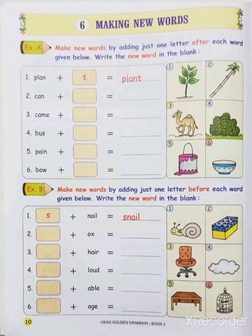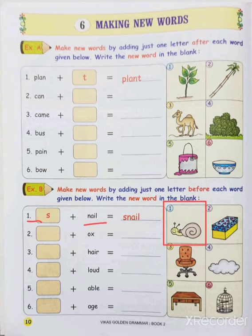Here we go. What is the first one? You can see N, A, I, L — nail. Nail means nakhun, as you all know. This is also a word. According to the picture, what is shown here? Snail. By adding S before, we get a new word: snail.